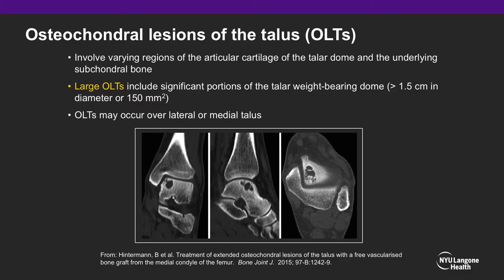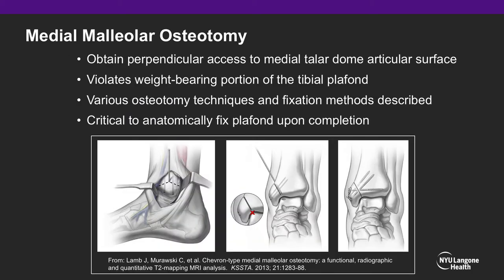Osteochondral lesions of the talus can involve varying amounts of articular cartilage. Large OLTs are considered lesions greater than 1.5 cm in size, and can occur on either the medial or lateral aspect of the talar dome. Medial malleolar osteotomy allows perpendicular access to the medial talar dome. However, the osteotomy violates the weight-bearing portion of the tibial plafond. While various osteotomy techniques and fixation methods are described, it is critical to fix this osteotomy anatomically upon completion. For these purposes, we prefer a chevron osteotomy.